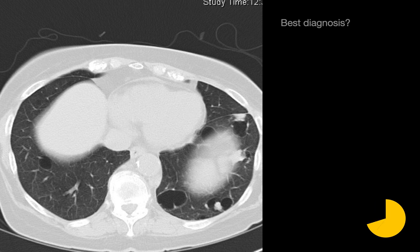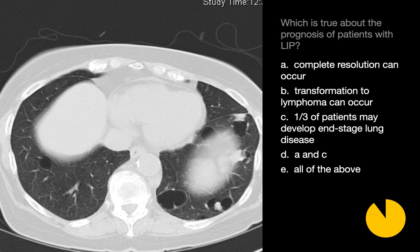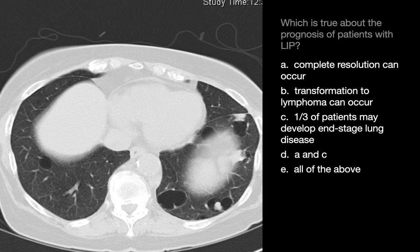What's your best diagnosis? This is another case of cystic lung disease; however, a number of cysts including two in the left lower lobe are associated with mural nodules. This constellation of imaging features is relatively specific for lymphocytic interstitial pneumonia, or LIP. What's true about the prognosis of patients with LIP? Prognosis of LIP can vary substantially. Some folks can have cases which completely resolve. Occasionally, these can actually transform to lymphoma. And unfortunately, a third of patients could go on to develop end-stage lung disease. So the answer here is E — all of the above.